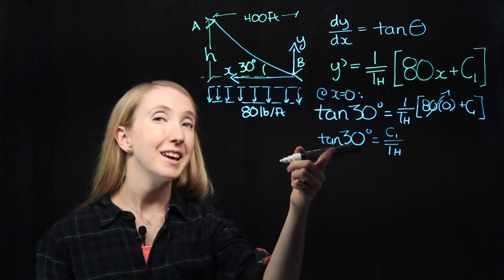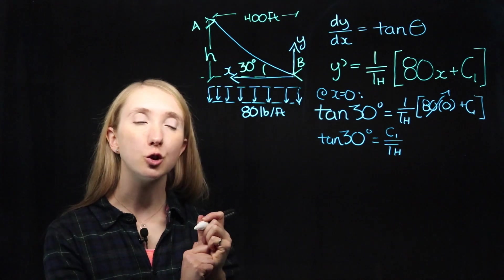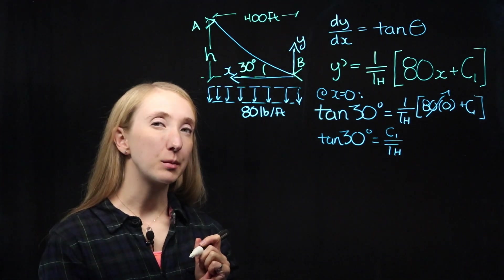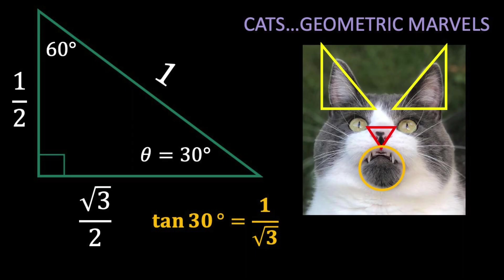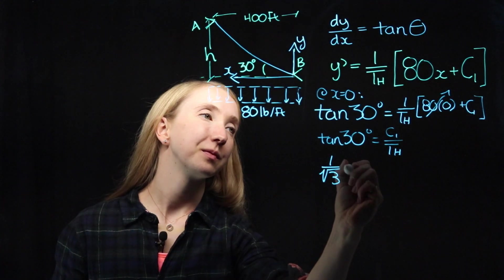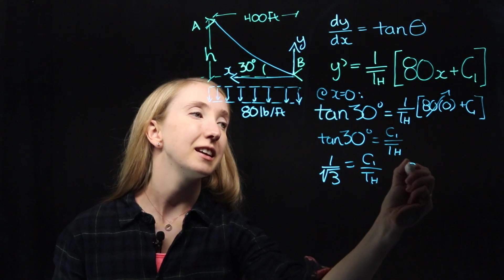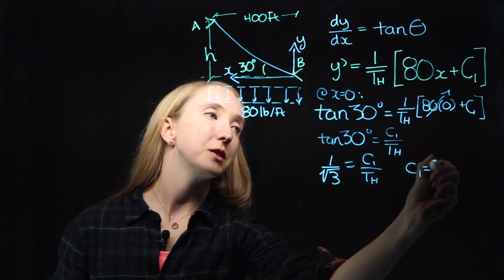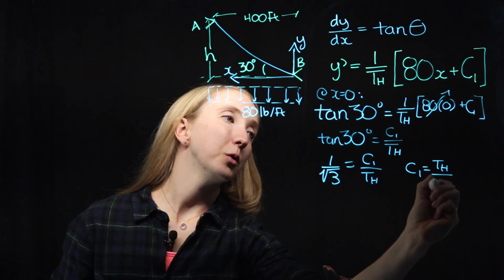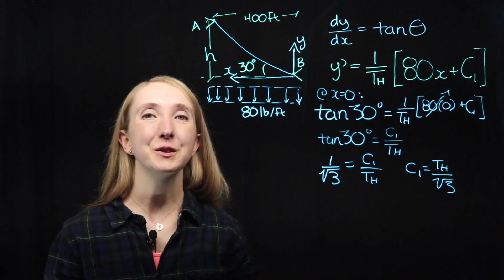And because this is a nice angle, we can use a special triangle to make this a little simpler. Because geometry is super neat, there's this cool triangle with 30 degrees that we can use to simplify tan 30 to a nice fraction of 1 over root 3. And we get that C1 must be equal to our horizontal tension over root 3.